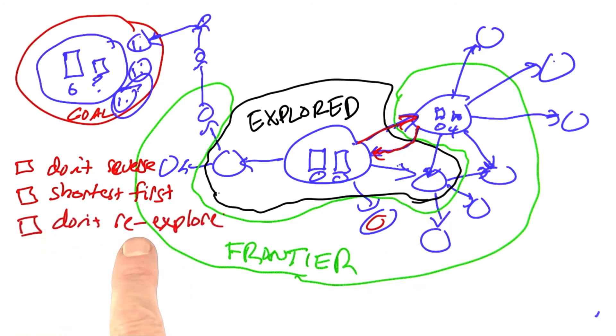Another strategy would be don't re-explore. That is, if we're on the frontier, and let's say we're here on the frontier, and we have a move that moves us back out of the frontier into the previously explored zone, then we should not allow that path. My question is, check all the strategies that would eventually lead us to the goal. Don't worry about the efficiency of getting to the goal, but which one will eventually get us there and won't get stuck in an infinite loop.